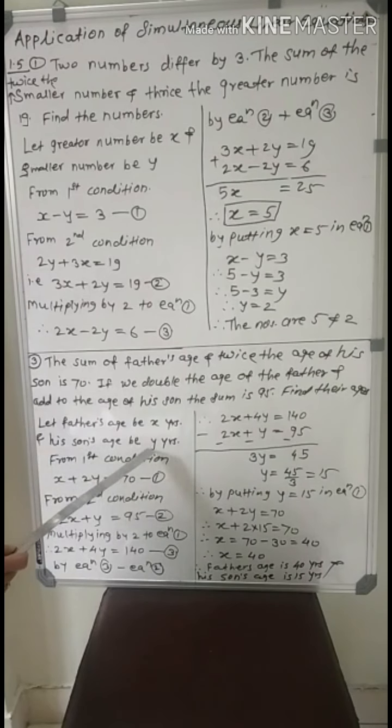From the first condition, the sum of father's age means father's age x, plus, and twice the age of his son, twice means 2y. X plus 2y, sum equal to 70. So this is the first equation from the first condition.